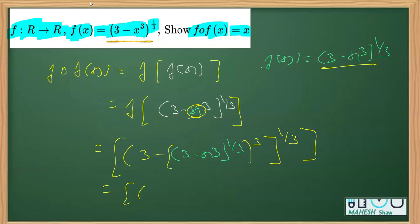Check here: on simplifying, you know that this power will get multiplied and will get cancelled. So inside we'll get 3 - x³ only, and then we have the 1/3 power.